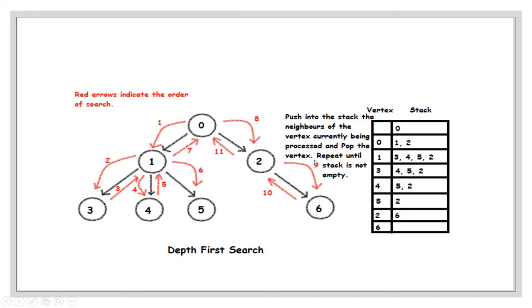The strategy adopted in depth first search is to search deeper whenever possible. This algorithm repeatedly searches deeper by visiting unvisited vertices, and whenever an unvisited vertex is not found it backtracks to the previous vertex, as seen in this picture.